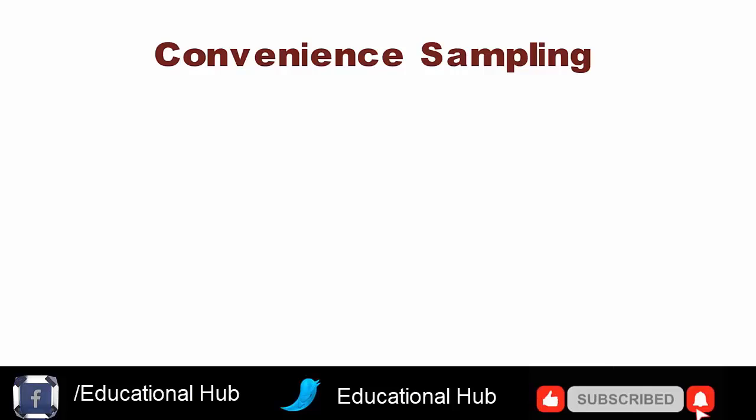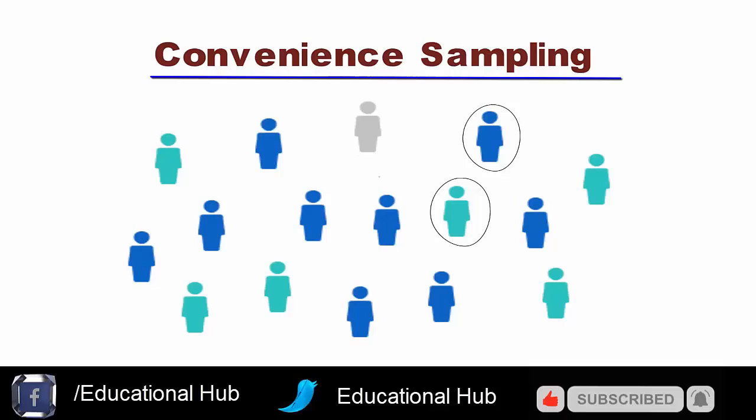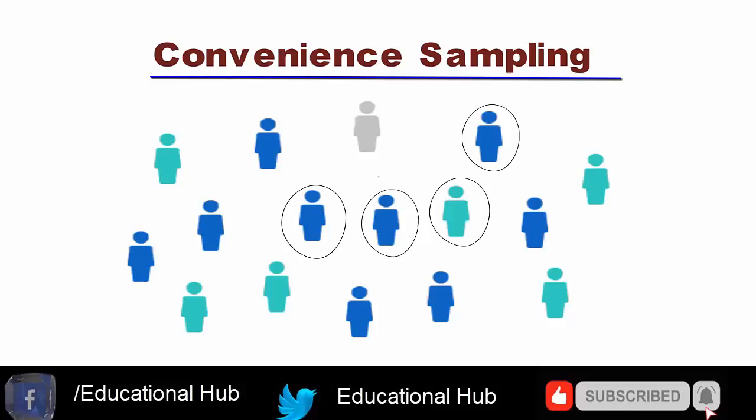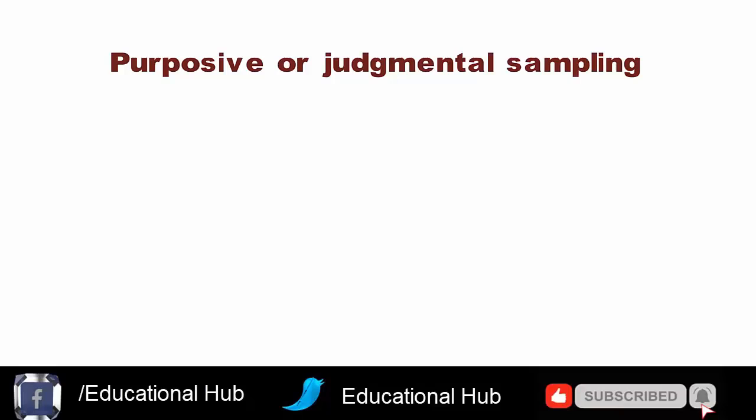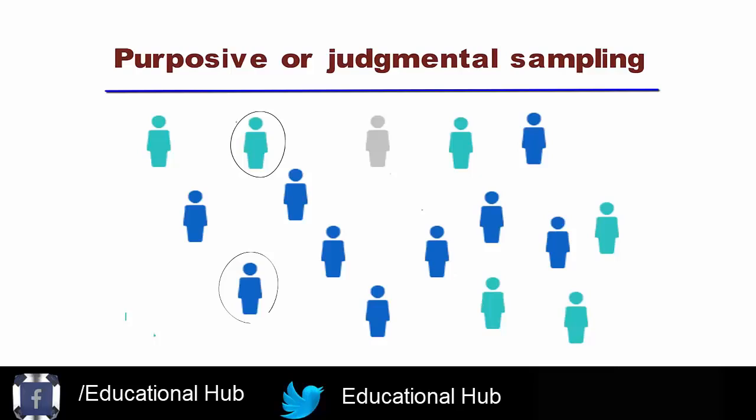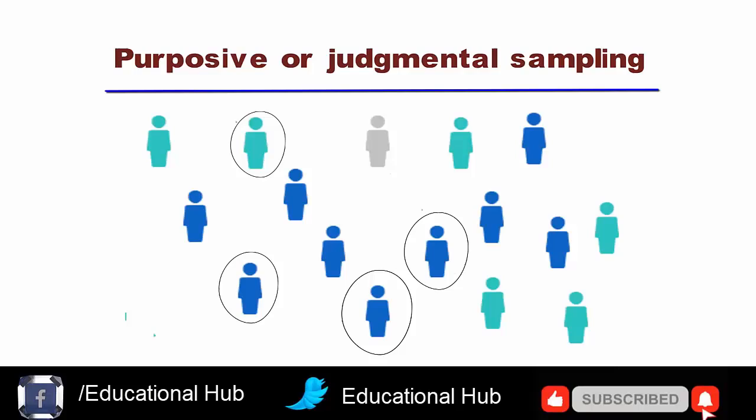3. Convenience sampling. Convenience sampling often helps to overcome many of the limitations associated with research; for example, using friends or family as part of the sample is easier than targeting unknown individuals. 4. Purposive or judgmental sampling. Purposive or judgmental sampling is a strategy in which particular settings, persons, or events are selected deliberately. It is where the researcher includes cases or participants in the sample because they believe that they warrant inclusion.